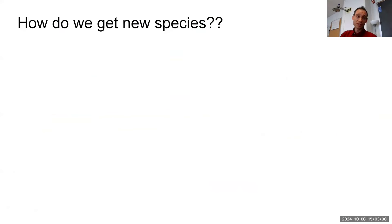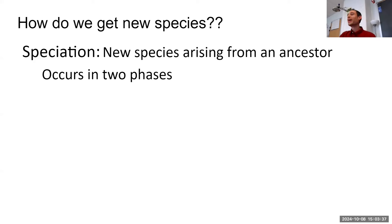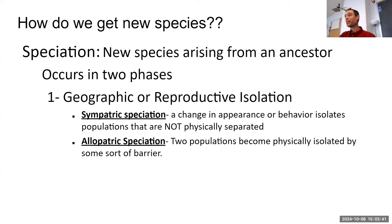How do we get a new species? If two different species can't successfully reproduce with each other, how do new ones arise? This is called speciation — new species arising from an ancestor. Humans and chimpanzees share a common ancestor but cannot successfully procreate. We have two types of speciation: allopatric speciation and sympatric speciation.